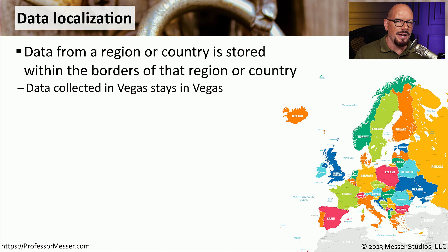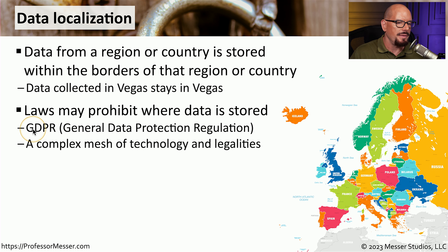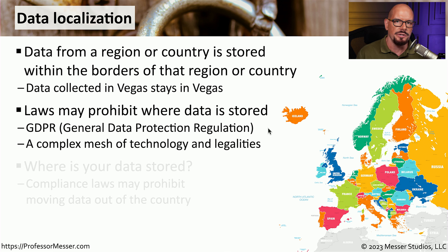In many geographic areas, one type of compliance is associated with data localization. This means that any data that is collected by that country must stay inside of that country. An example of this can be found in the GDPR — the General Data Protection Regulation that is associated with the European Union. There are a number of rules associated with how data should be stored and where data should be stored.